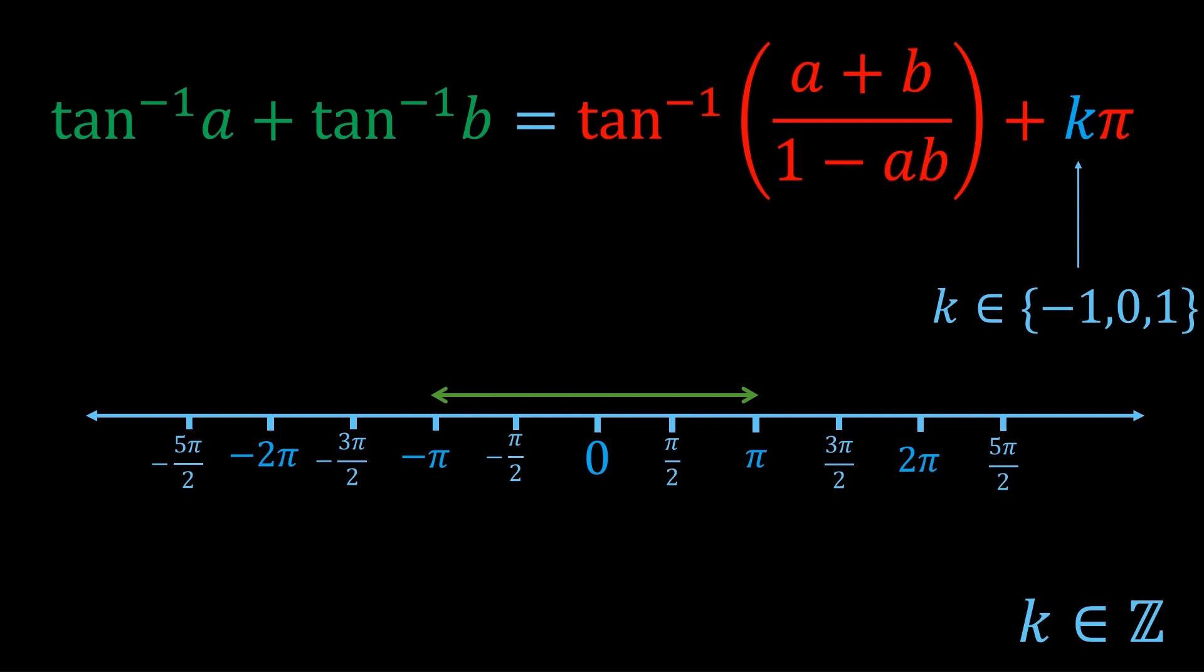The value of k that you take depends on what a and b are. Obviously, this is in general, but if you have a and b as actual numbers that you're given, then you can find out the exact k value which satisfies this equation, just by considering ranges.